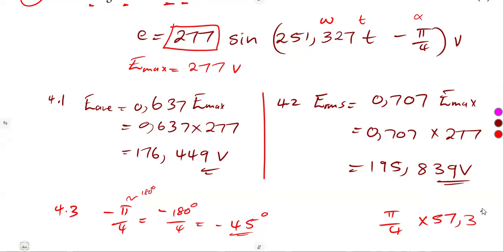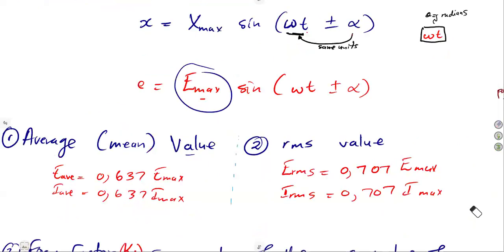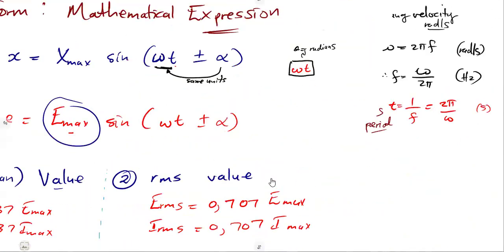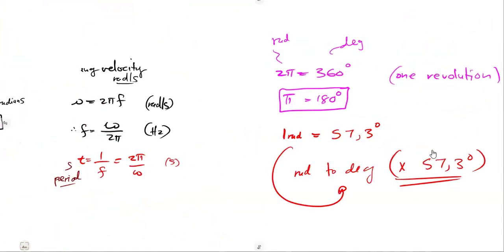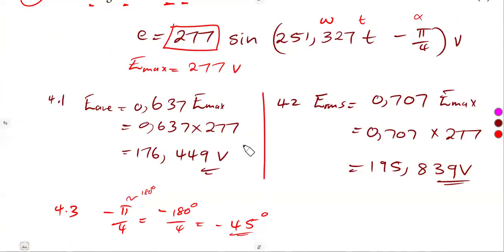You can also multiply the pi over 4 by 57.3 degrees — that is the conversion from radians to degrees. If you are converting radians to degrees, you can simply multiply by 57.3. So we've got a phase shift of 45 degrees, which is a lagging angle. The negative means we are subtracting, giving a shift of negative 45 degrees.